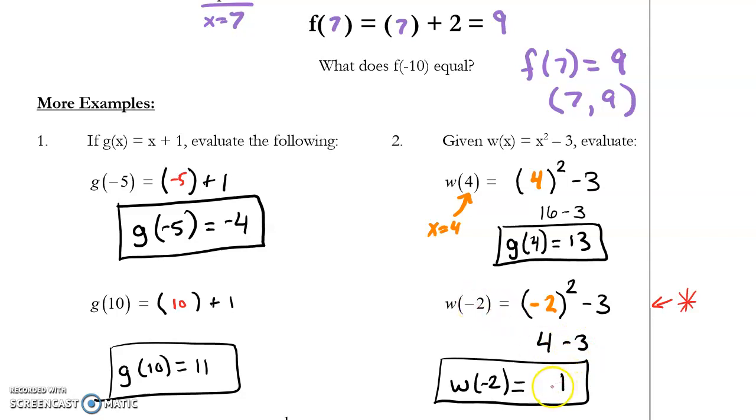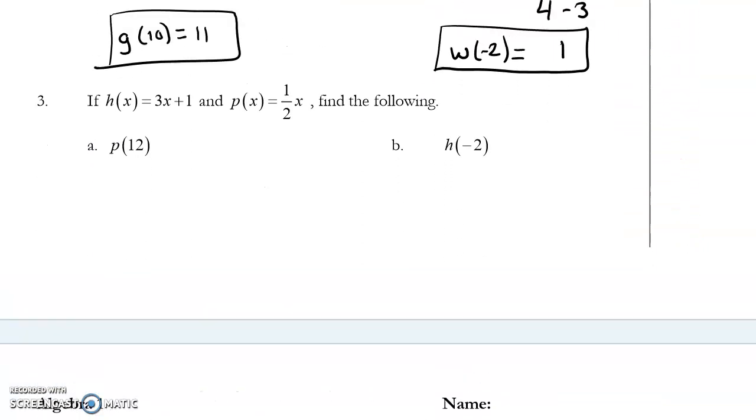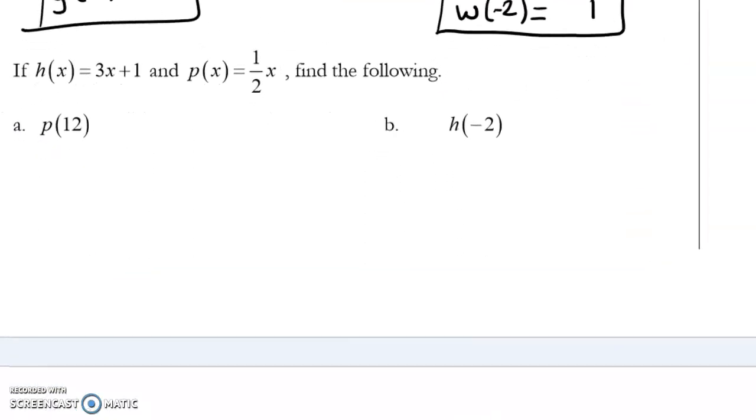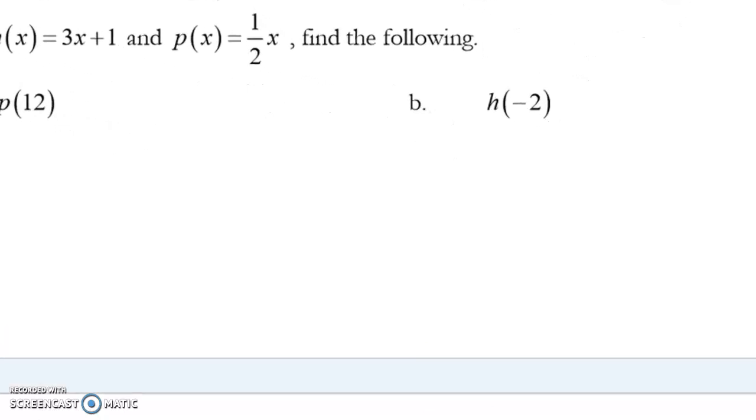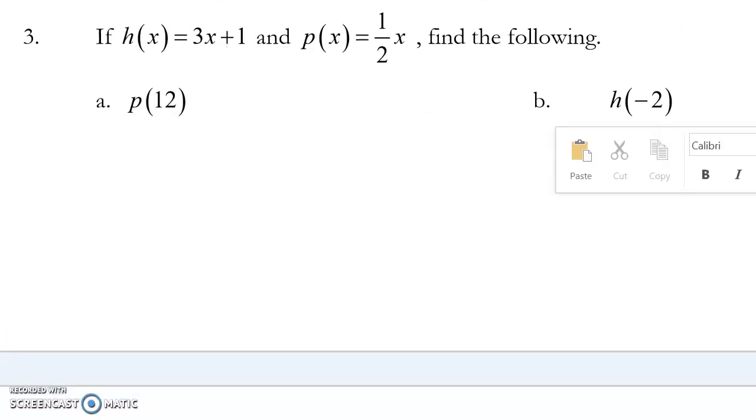Now the first example where it matters that we have different names is we could have two different functions in the same problem. So here, I have function h and function p, and they're different functions. They both have the same input. h has the input x, and I'm taking 3 times x and adding 1. p has an input of x, but I'm only taking half of x.